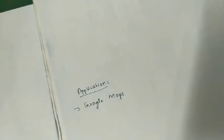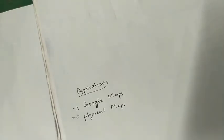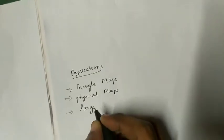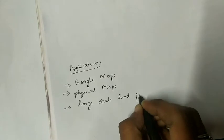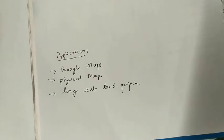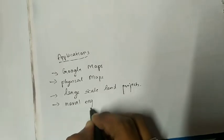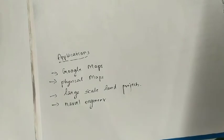In physical maps — where we have a paper copy of the map — coordinate geometry is also used by using dots to join the map. After that, in large-scale land projects, they mark everything as points and plan everything using coordinates. Also in naval engineering, in ships and all, they do engineering works where coordinate geometry is used.